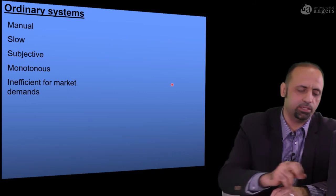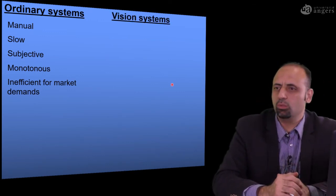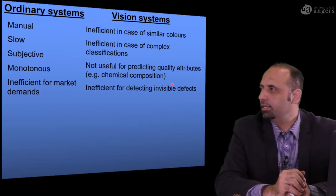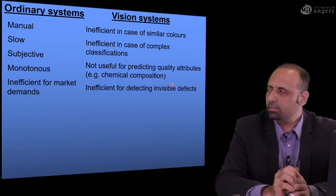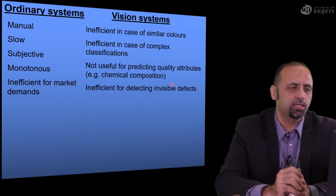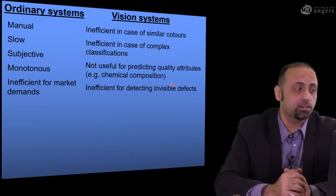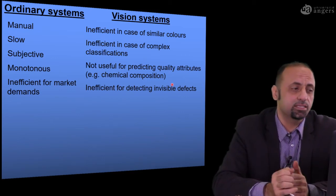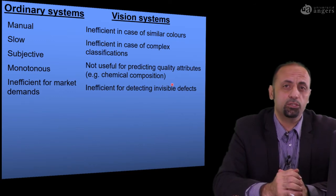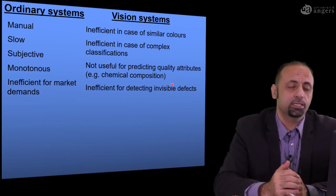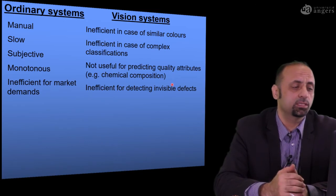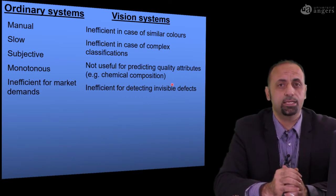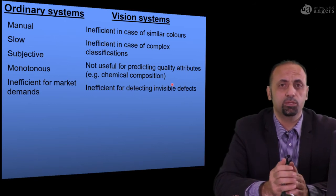Another solution is to install robots or cameras using a vision system depending on color imaging. This system as well is not sufficient in some situations like objects with similar colors or in case of complex classifications like very tiny, very small objects like seeds. Even if you need to predict some internal attributes like chemical composition, this vision or normal imaging system is not sufficient. In general, if you need to see something not visible to your naked eyes, the normal camera is unable to give you this kind of information.